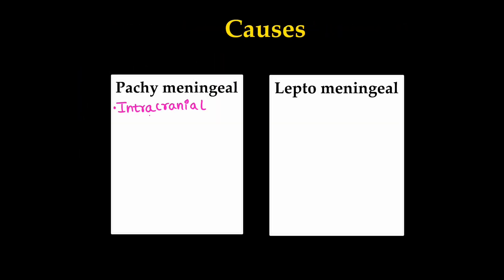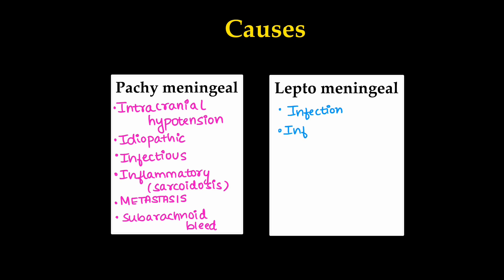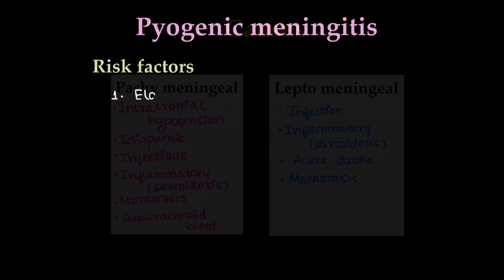Pachymeningeal enhancement can be caused by intracranial hypotension, idiopathic causes, infectious diseases, inflammatory diseases like sarcoidosis, metastasis, and subarachnoid bleed. Leptomeningeal enhancement can be seen in infection, inflammatory cases, acute stroke, and metastasis.